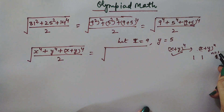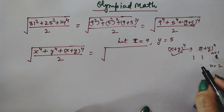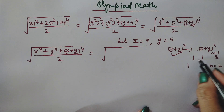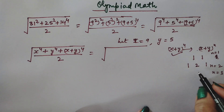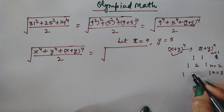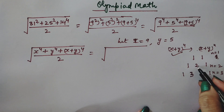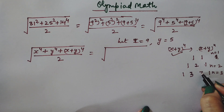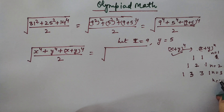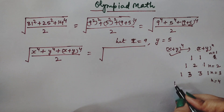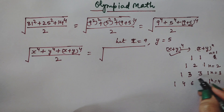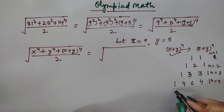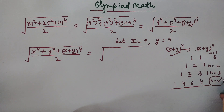For n=1, coefficients are 1, 1. For n=2, we get 1, 2, 1. For n=3, we get 1, 3, 3, 1. For n=4, we get 1, 4, 6, 4, 1, since 1+3=4, 3+3=6, and 3+1=4.